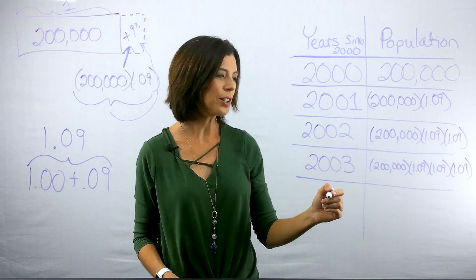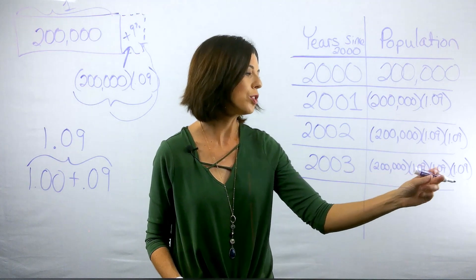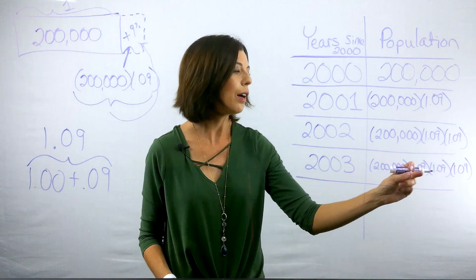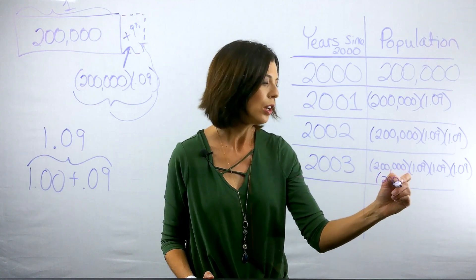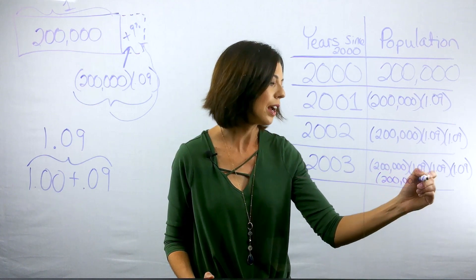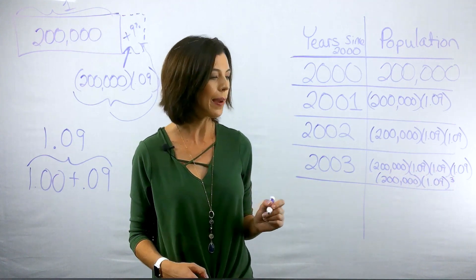So as I continue to go down, I noticed that in three years since 2003, I have 1, 2, 3 of my 1.09. So I could think of this really as writing 200,000 times 1.09 raised to the third power.